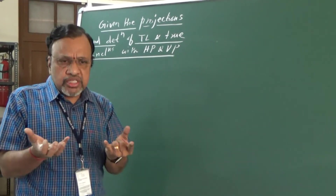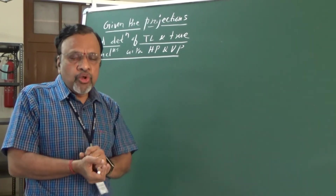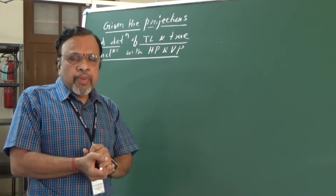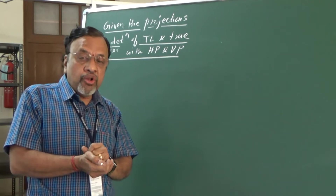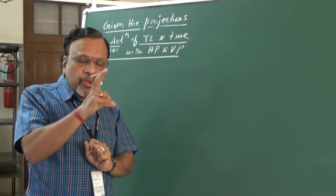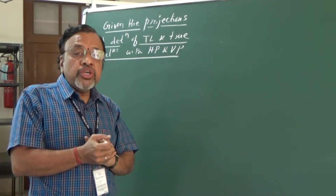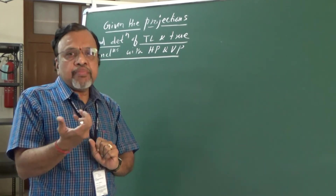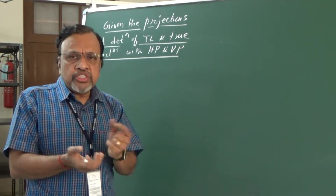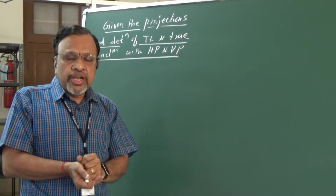We can determine this just by reversing the process. Also, we have one golden rule: when a line is parallel to a particular plane, in that plane we see the true length, and we also see the true inclinations with the other plane. Using this golden rule, it is always possible for us to determine the true length and true inclinations.